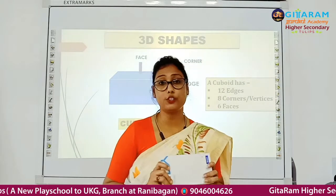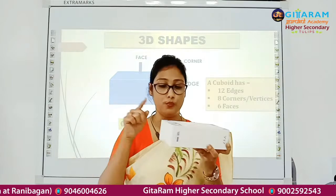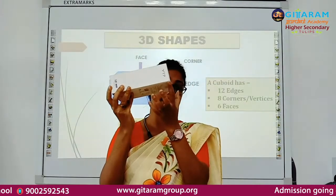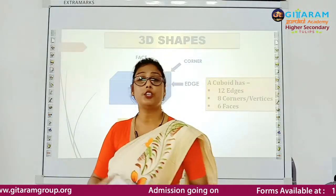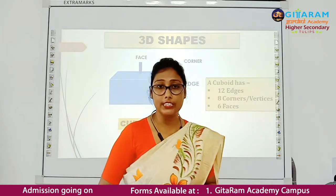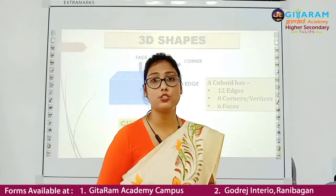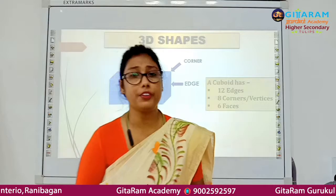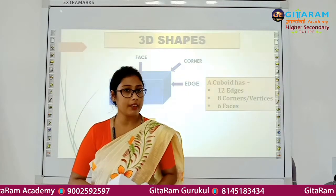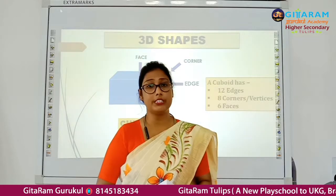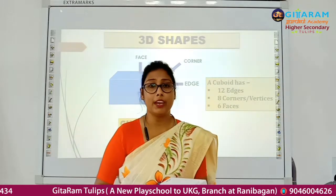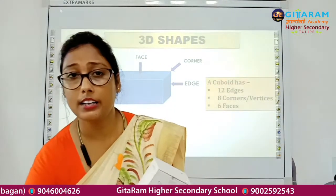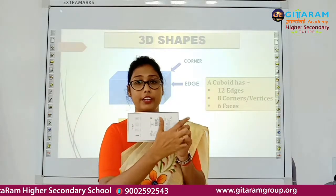Now 8 corners or vertices: 1, 2, 3, 4, 5, 6, 7, 8. So a cuboid has 12 edges, 6 faces, and 8 corners. The basic features of cube and cuboid are the same. The only difference is a cube is made of squares, but a cuboid is made of rectangles.